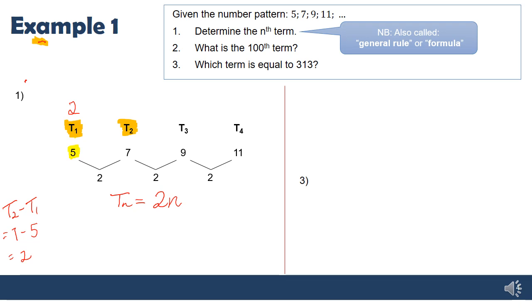Two times 3 gives 6, and 2 times 4 gives 8. In all these cases I'm not where I want to be, but to get from 2 to 5 I add 3, from 4 to 7 I add 3, and from 6 to 9 I add 3. So for the general rule to work for this pattern, I need to add 3, giving T_n = 2n + 3.